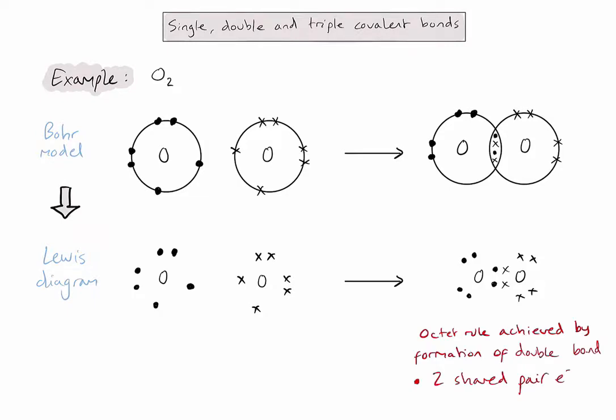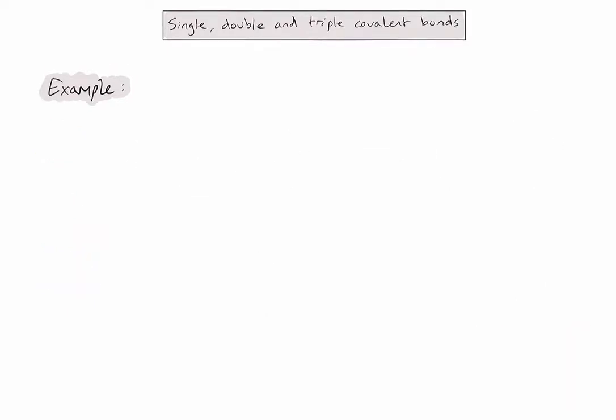Let's now look at a third example. In this example, let's consider how a nitrogen molecule, N2, is formed from two nitrogen atoms. So let's first draw the Bohr model of the two nitrogen atoms. They're in group 15, so they'll have five valence electrons.